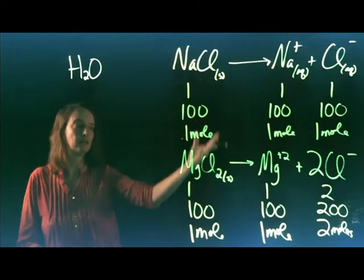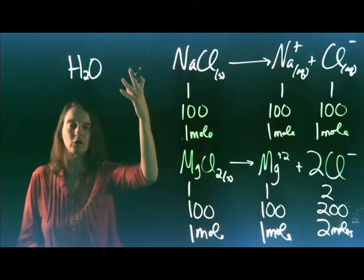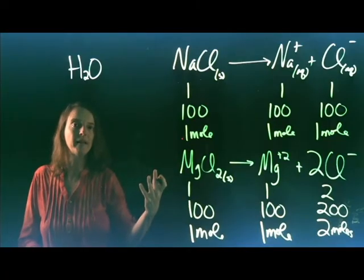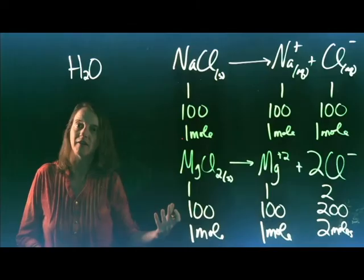Any magnesium chloride that we had dissolved in the water would make the solution conductive. Natural bodies of water have minerals dissolved in them and it is those minerals producing ions that create the conductivity of that water.